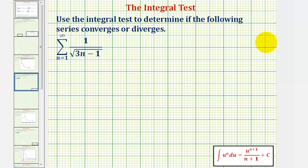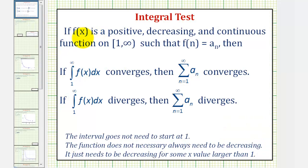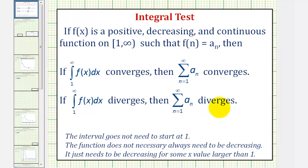We want to use the integral test to determine if the following series converges or diverges. To apply the integral test, we first want to find a function f of x that is positive, decreasing, and continuous on the interval from one to infinity such that f of n equals a sub n. Then, if this integral converges, then the infinite series converges. And if this integral diverges, then the infinite series also diverges.